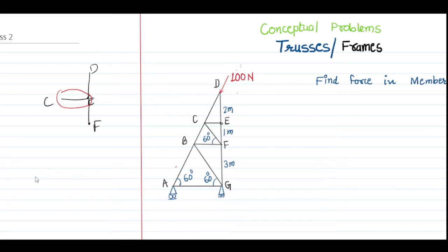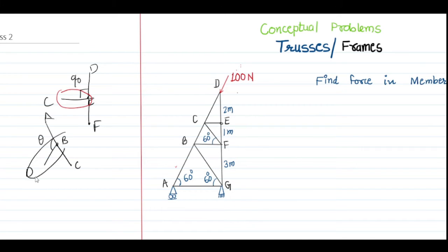Similarly, if we have two collinear members with a side branch at some angle theta — not necessarily 90 degrees — with members A, B, C and D, the BD member is the side branch and will experience zero force. Applying this concept to the given truss at joint E: CE is a side branch, so CE is a zero force member.